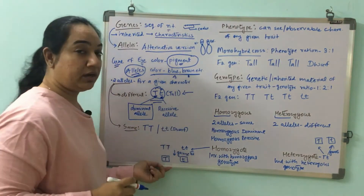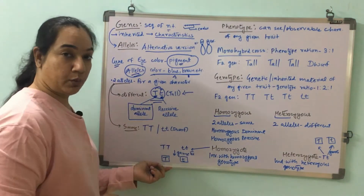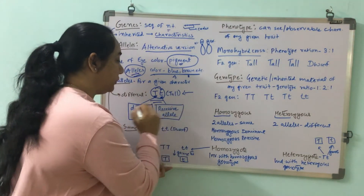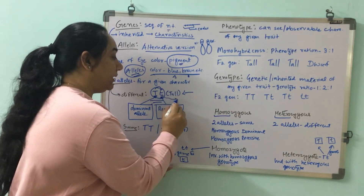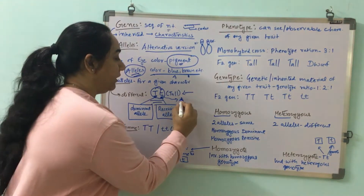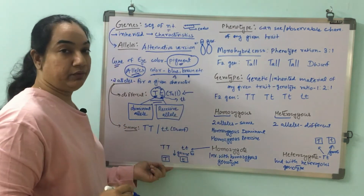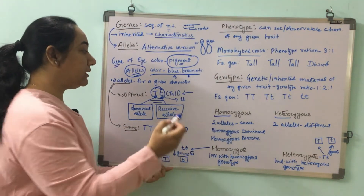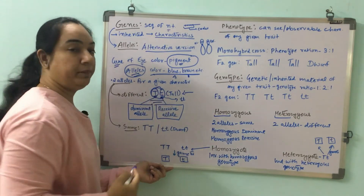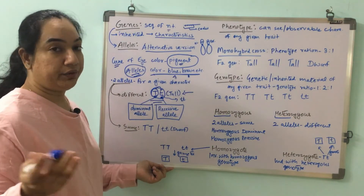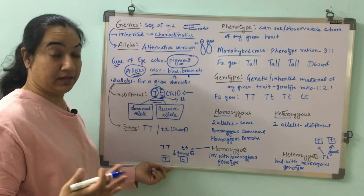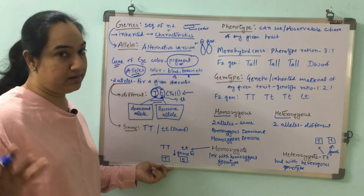The other allele that is not getting expressed in the presence of the dominant allele is called the recessive allele. When can we see the recessive allele expressed? Only when there are two copies of the recessive allele do we see that phenotype. If even one copy of the dominant allele is present, it will get expressed and will not allow the recessive allele to express — that's why it is called the dominant allele.